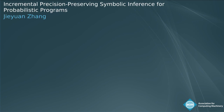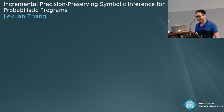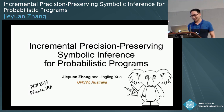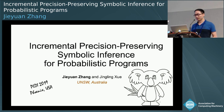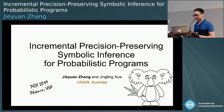My name is Jiren Zhang. I will talk about our work: incremental precision-preserving symbolic inference for probabilistic programs. It's a joint work with Professor Chen Nishui.